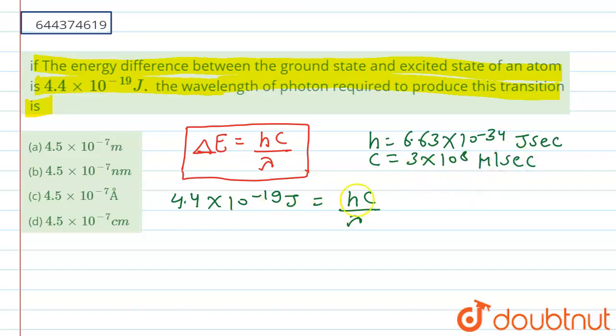Now if we put this value and calculate λ, so basically λ is equals to hc by 4.4 × 10^-19 joules.